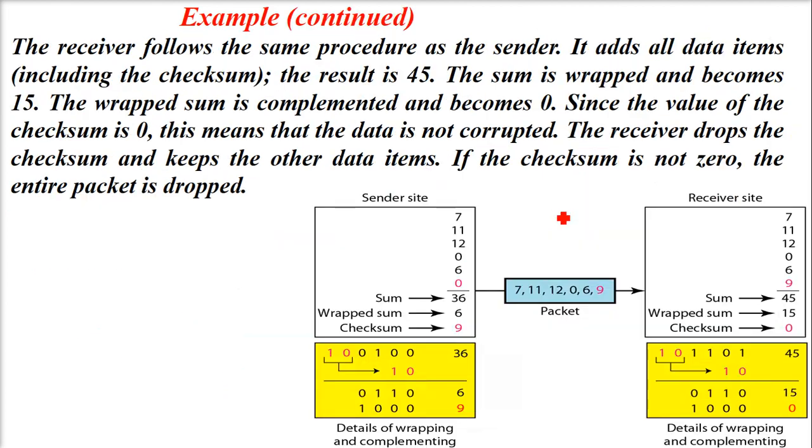What happens at the receiver side? The receiver adds all the data it received: 7, 11, 12, 0, 6, 9. Whatever is received, it adds, and it sees it comes to 45. If you write 45 in binary, it's 101101. We have to wrap it around in 4 bits.